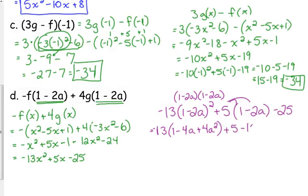Distribute the 5. So, we get plus 5 minus 10A. And, we've got a negative 25 chilling there on the end. Last thing we've got to do is distribute that negative 13. So, negative 13 times 1 is negative 13. Negative 13 times negative 4 is positive 52. Negative 13 times 4A squared is negative 52A squared. Minus 10A minus 20. I was combining these terms down here.